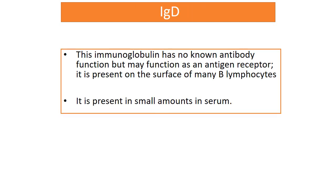The last immunoglobulin is IgD, also known as a defective antibody. It is present in a very small amount in the serum and has no known effector function, except that it is present on the surface of many B lymphocytes.